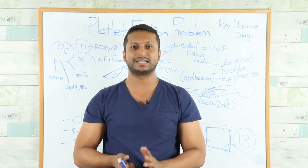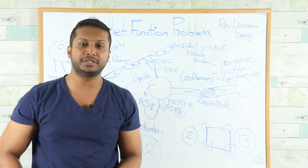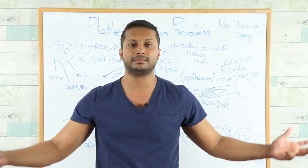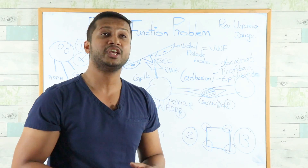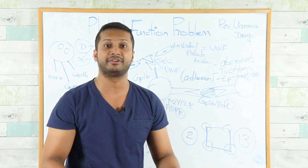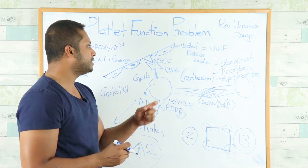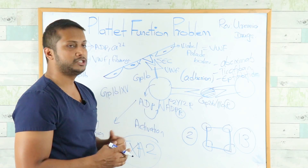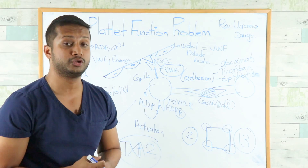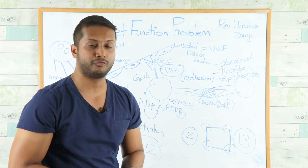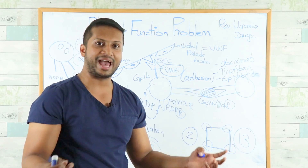To summarize reversible causes: uremia, aspirin, P2Y12 inhibitors, and GP2b3a inhibitors. Once you understand the mechanism, you never have to memorize again. Moving to genetic disorders — if a patient lacks von Willebrand factor, the platelet plug cannot form because von Willebrand factor cannot bind subendothelial collagen. This defect is at the step of adhesion.